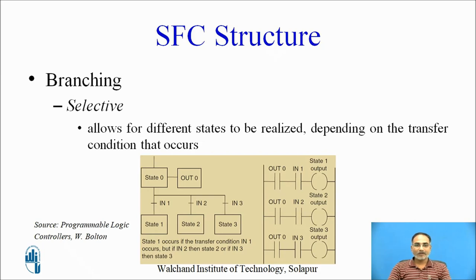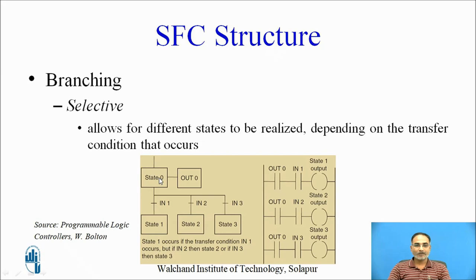In a sequential function chart you have branching facility. There are two types: selective and parallel. Selective branching allows different states to be realized depending on which transfer condition occurs. For example, after state 0, the sequence goes to state 1 if input 1 is realized, to state 2 if input 2 is realized, or to state 3 if input 3 is realized. So you have three choices after state 0 — this is selective branching.